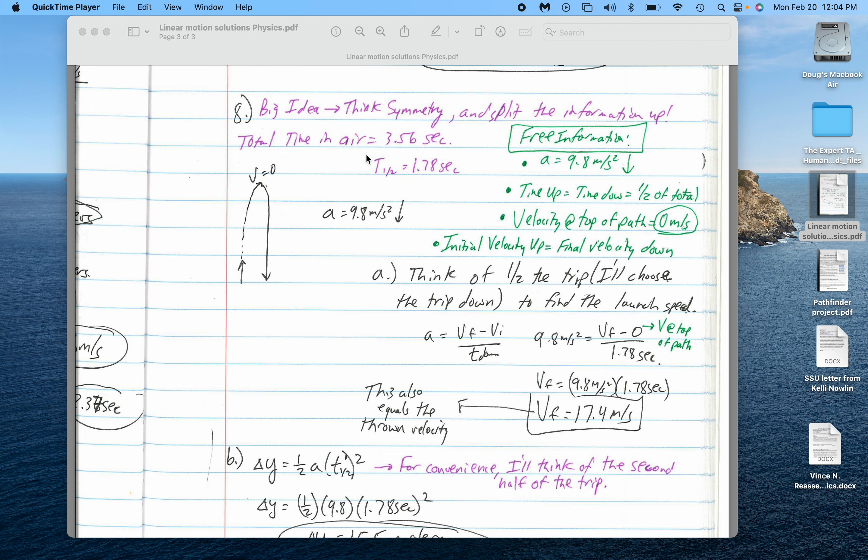I make the idea to think symmetry and split this information up. You're only given one piece of information that basically, mathematically, this thing was in the air 3.56 seconds. But there's a lot of free information.